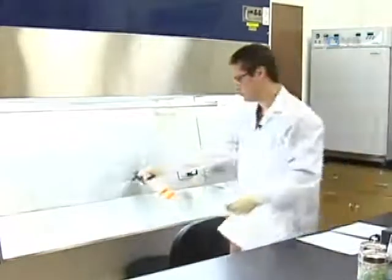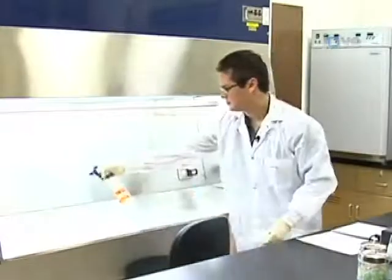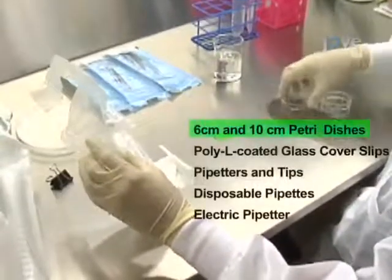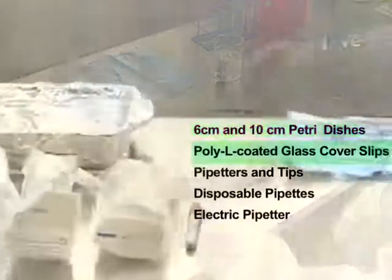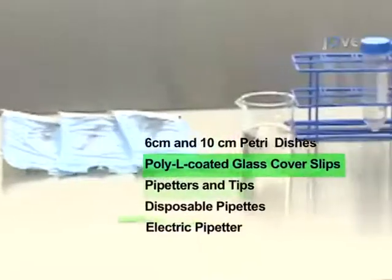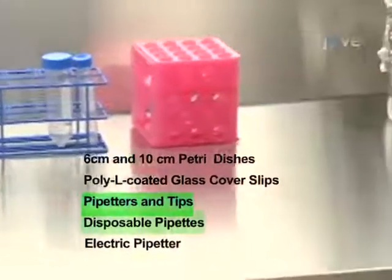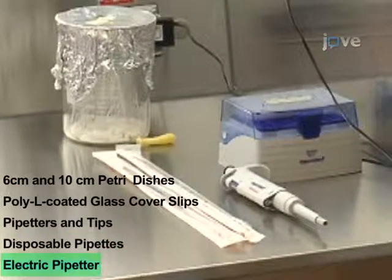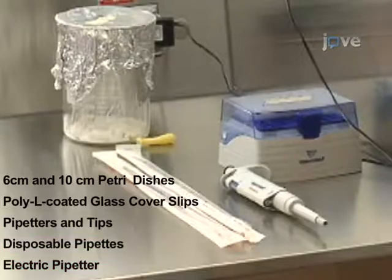Spray down the culture hood with 70% ethanol and place the tools inside the hood. You will need 6 and 10 centimeter petri dishes, sterile poly-L-coated glass cover slips, pipetters and tips, disposable pipettes, and an electric pipetter. From this point on, remember to use correct sterile technique.